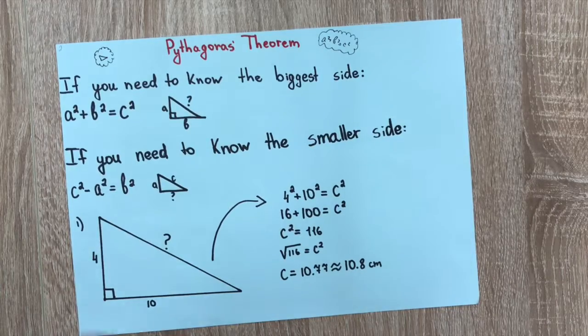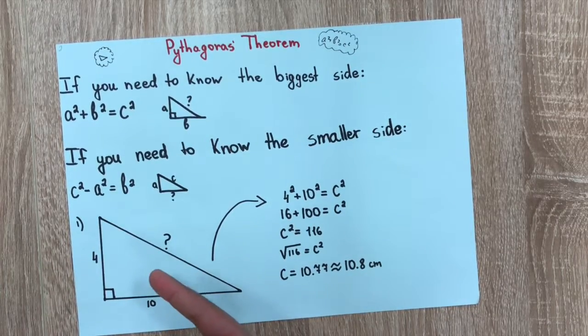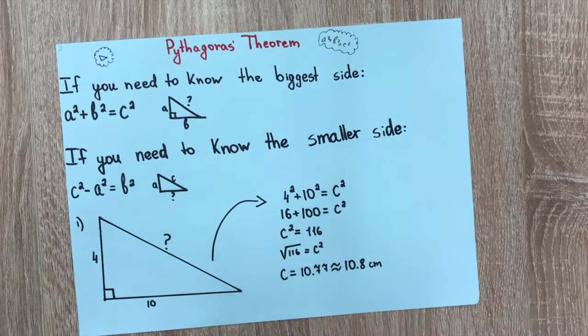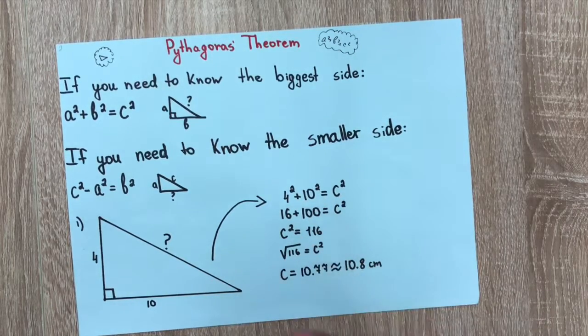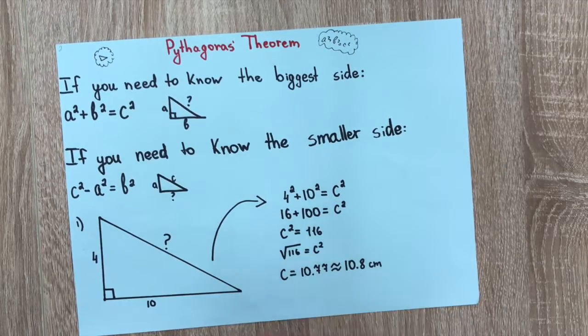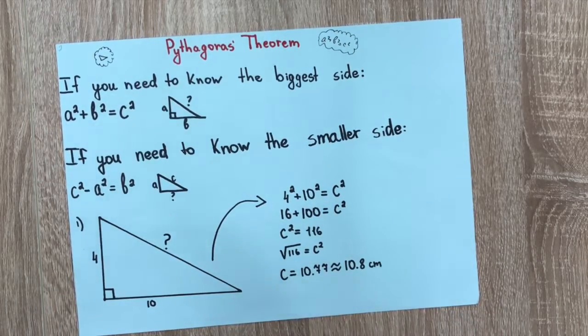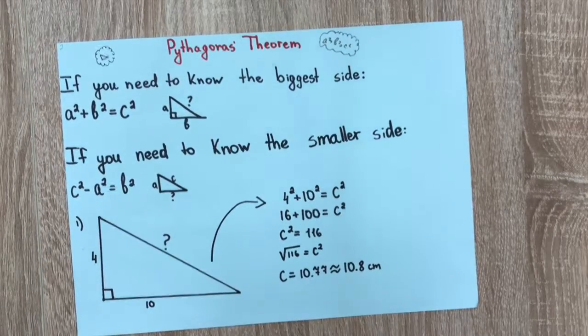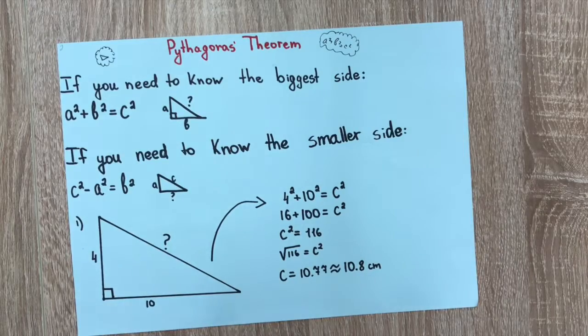An example: 4 and 10, and we need to know the hypotenuse. 4² + 10² = c². 4² equals 16, 10² equals 100. 16 plus 100 equals 116. Now we need to know the square root of 116 equals 10.77, which is approximately 10.8.